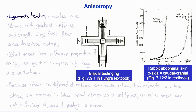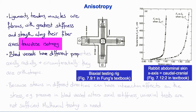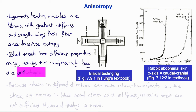Another important property of soft tissues is that their structure tends to make them anisotropic. Ligaments, tendons, and muscles are fibrous and tend to have greater stiffness and strength along the axes of their fibers, leading to the material symmetry approximation of transverse isotropy. Other tissues such as blood vessels have different properties along three mutually perpendicular axes — the axial, radial and circumferential axes — and these materials are known as orthotropic.